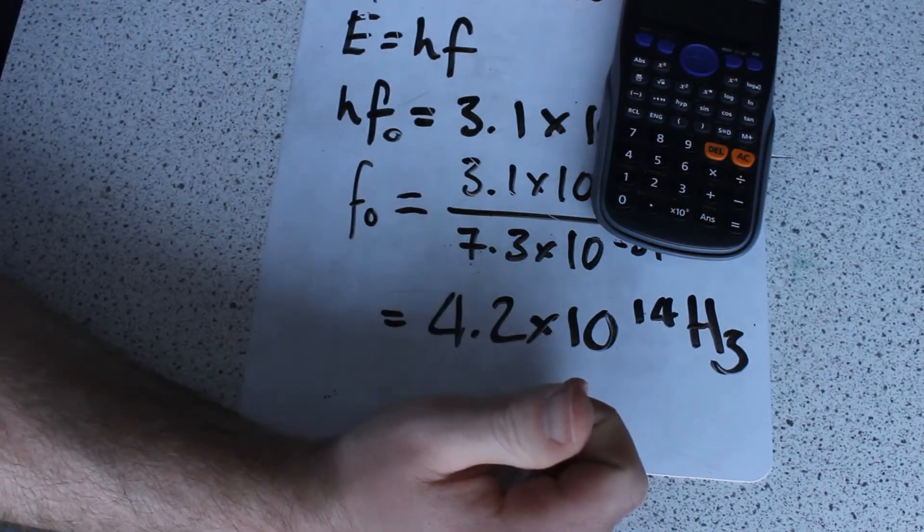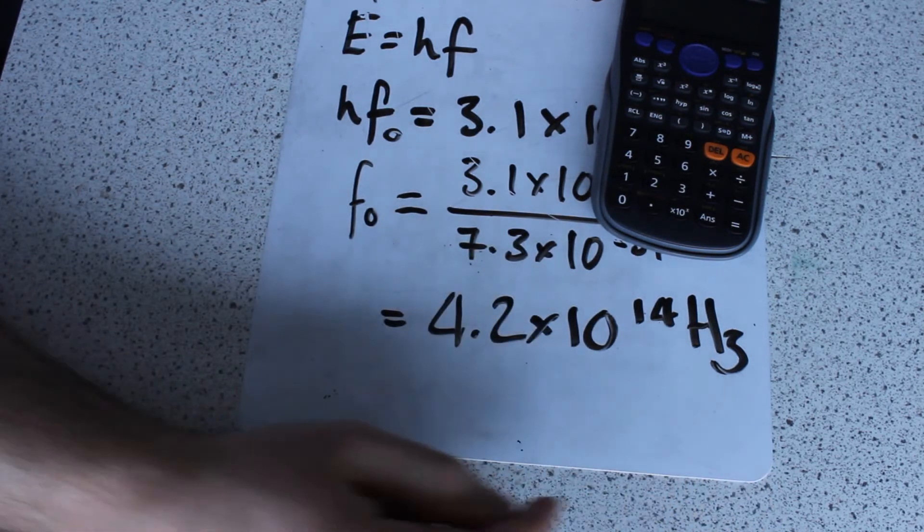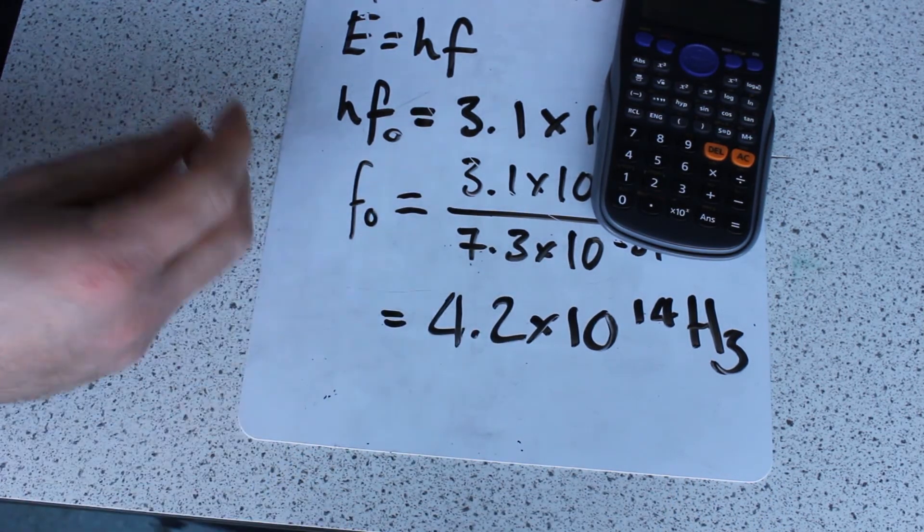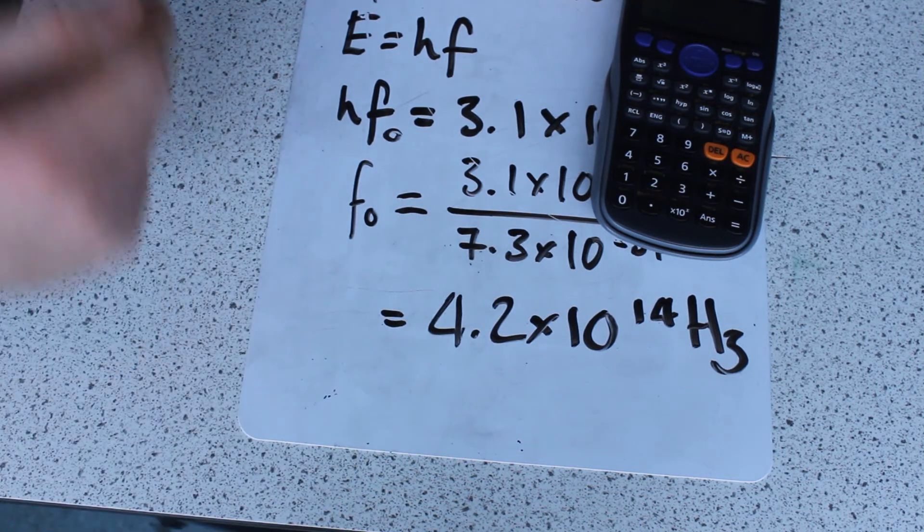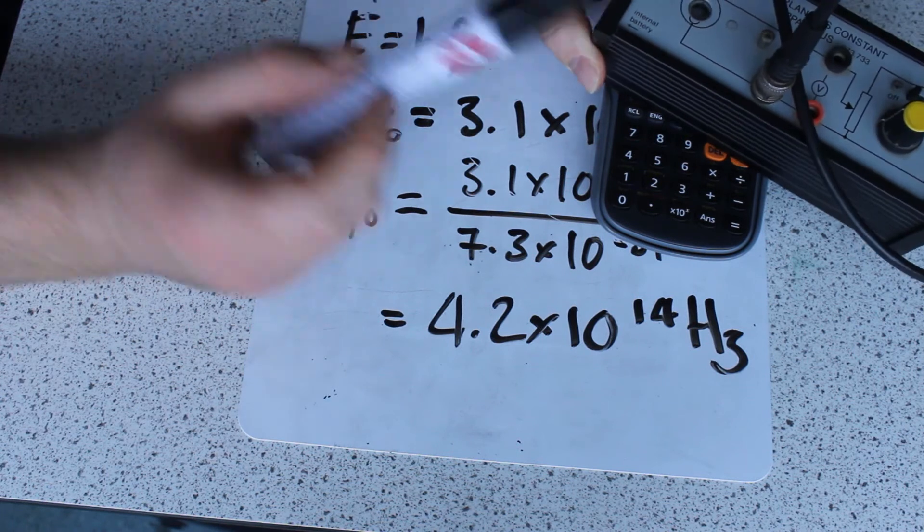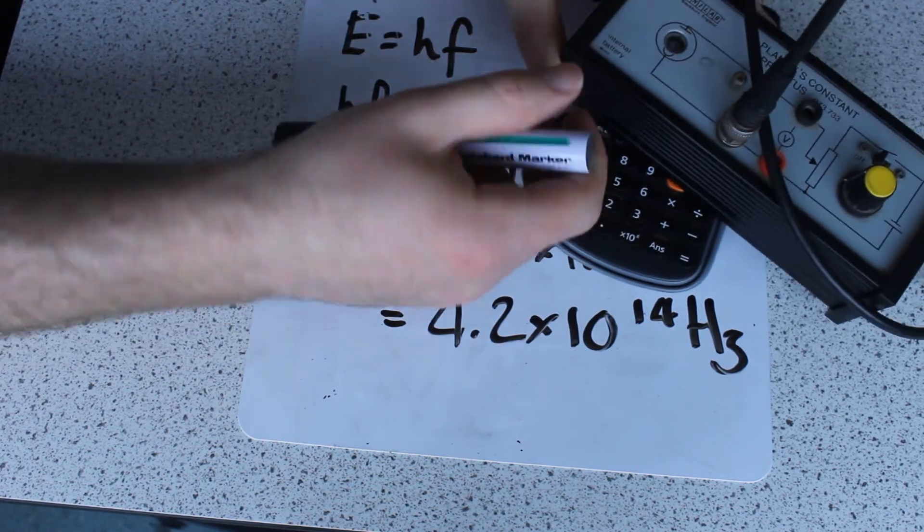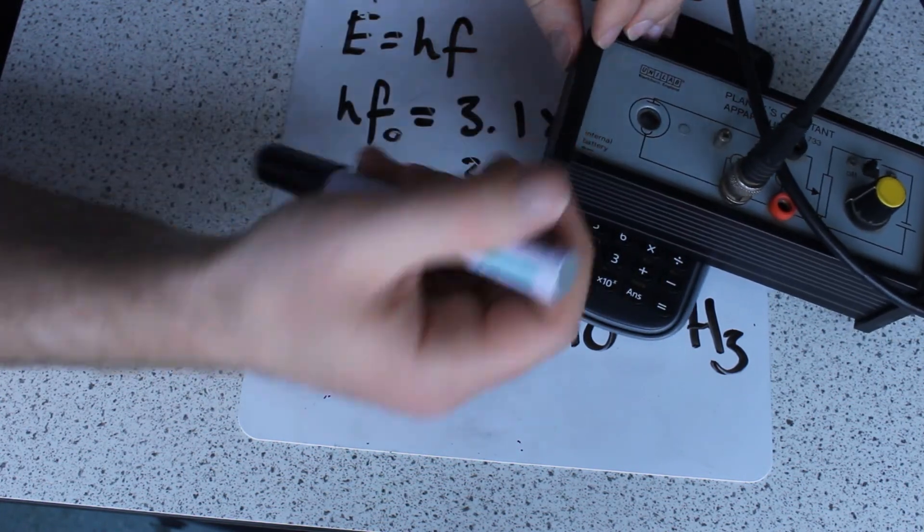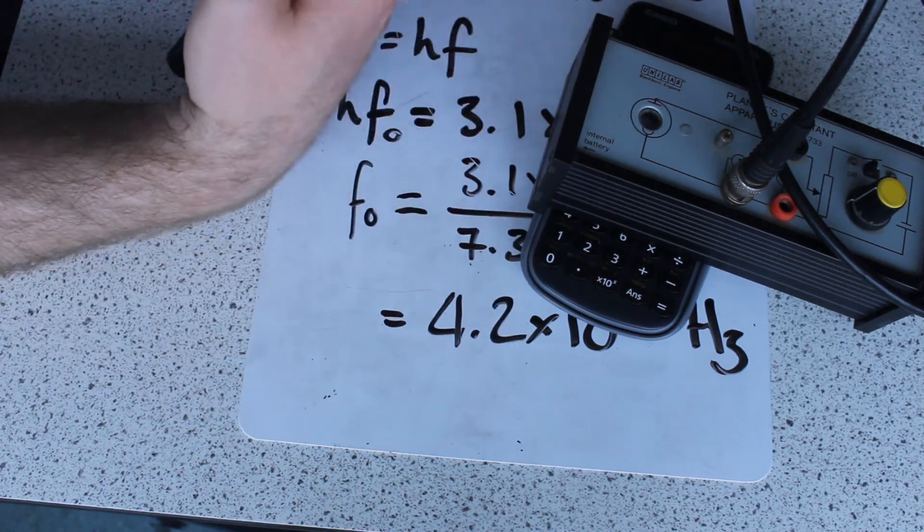So that's right at the red end of the visible spectrum. This is the minimum frequency a photon needs to liberate an electron. And that would make sense for something which they're designing so that we can do an experiment in a lab with a good range of frequencies to measure Planck's constant.